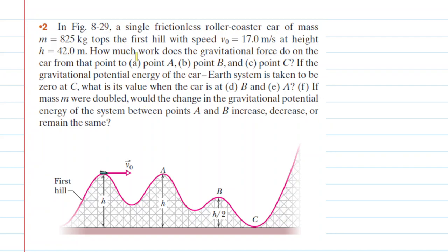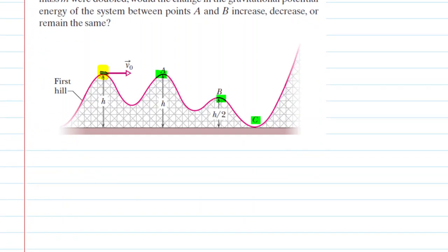In parts A, B, and C, we have to calculate how much work the gravitational force does as the roller coaster car moves from this initial point here to various points labeled A, B, and C. In order to calculate the work done by the gravitational force, we're going to take advantage of the following idea.